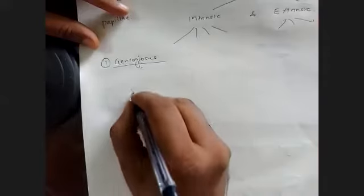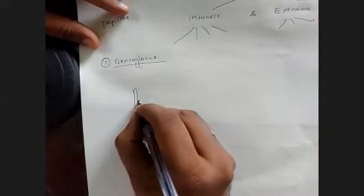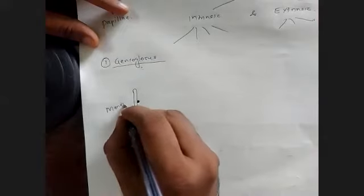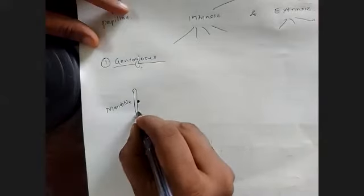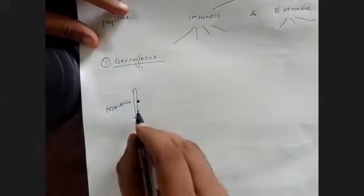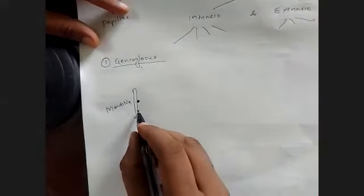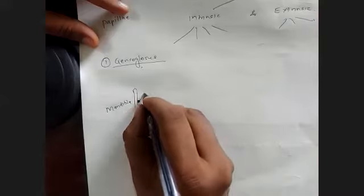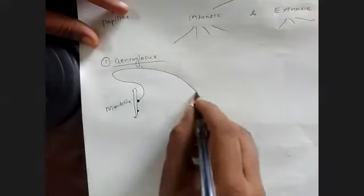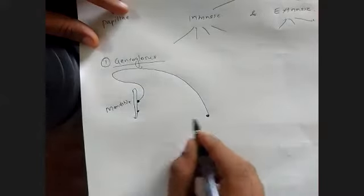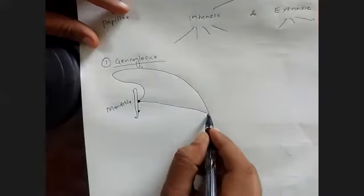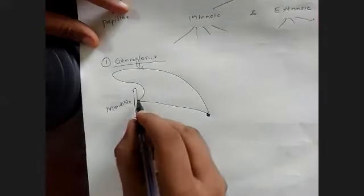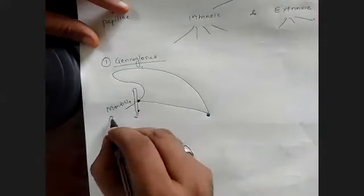The origin of the genioglossus is from the upper genial tubercle of the mandible. Looking in a sagittal section, there is an upper genial tubercle and a lower genial tubercle. From the lower genial tubercle originates the geniohyoid muscle. From the upper genial tubercle originates the genioglossus muscle. The fibers run right up to the hyoid, but the origin is at the genial tubercle.